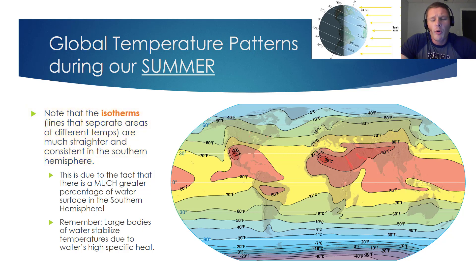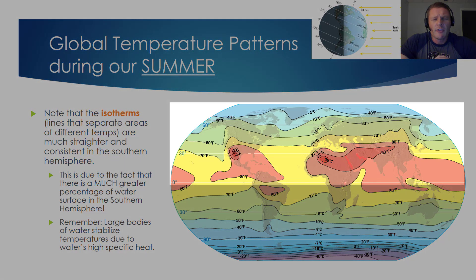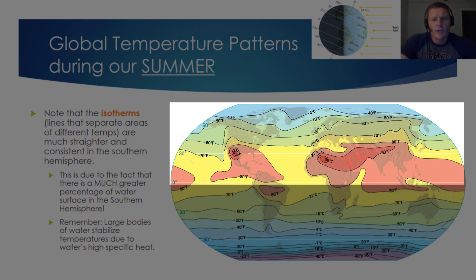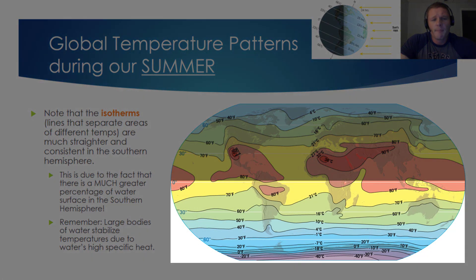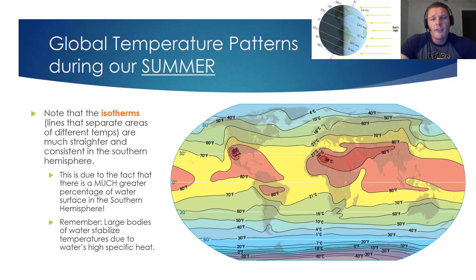There's one very important thing I need to point out. Take a look at how squiggly the isotherms are in the Northern Hemisphere, and then compare them to what you see in the Southern Hemisphere. In the Southern Hemisphere, the isotherms are relatively straight compared to what we see in the Northern Hemisphere.